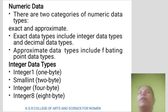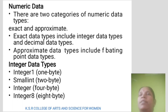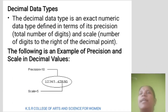Numeric Data. There are two categories of numeric data types: exact and approximate. Exact data types include the integer data type and decimal data type. Approximate data types include the floating point data types. Integer data types include: integer, small int, integer 8, etc.